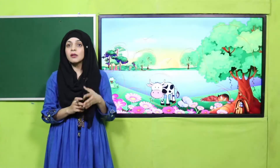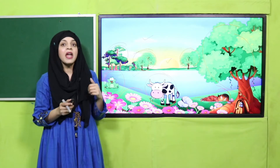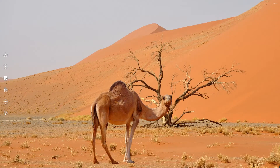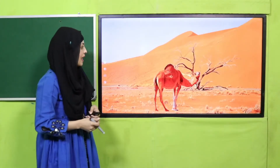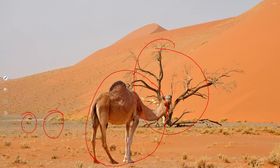We have pointed out some living and non-living things. Remember what we have studied about living and non-living things. Now let's look at this next picture — it is a desert. Let's circle all the living things: this camel can move, grow, and breathe, so it is a living thing. The plants, this grass, and this tree are all living things. Now let's put a tick on the non-living things: this mountain, this soil, and the rocks are all non-living things.